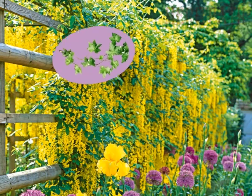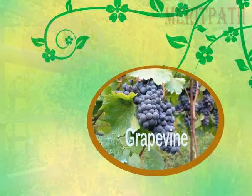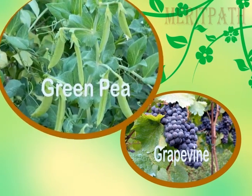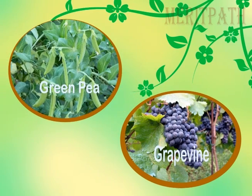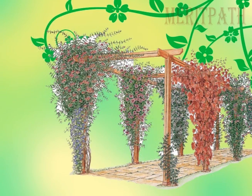Climbers: their stem is so weak that they need support to climb up. The grapevine and pea plant are examples of climbers, as they cannot stand on their own.